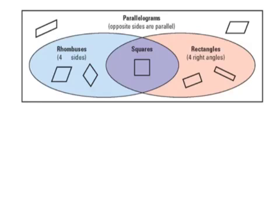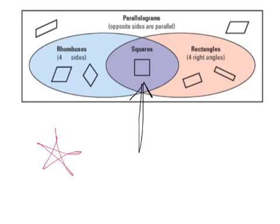For your notebook, put in a Venn diagram — this is going to help us do everything. A square is a rectangle, a rhombus, and a parallelogram. A rectangle can only be a rectangle and a parallelogram. A rhombus is a rhombus and a parallelogram — a rhombus cannot be a rectangle or a square. A square is part of every circle and the box. This Venn diagram is awesome.